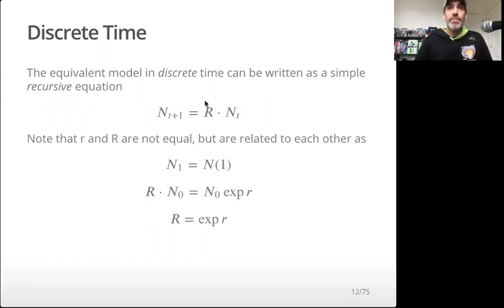The equivalent discrete time model can be written as N at time t+1 is some growth rate times N of t. We're going to note that this big R growth rate here is not equal to the little r per capita growth rate, but they are directly related to each other.